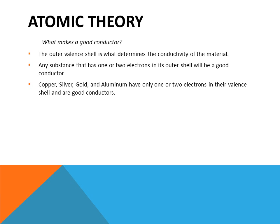What makes a good conductor? The outer valence shell determines the conductivity of the material. Any substance that has one or two electrons in its outer shell will be a good conductor. Copper, silver, gold, and aluminum have only one or two electrons in their valence shell and are very good conductors.